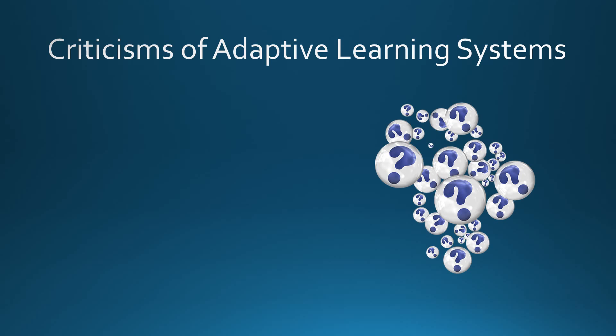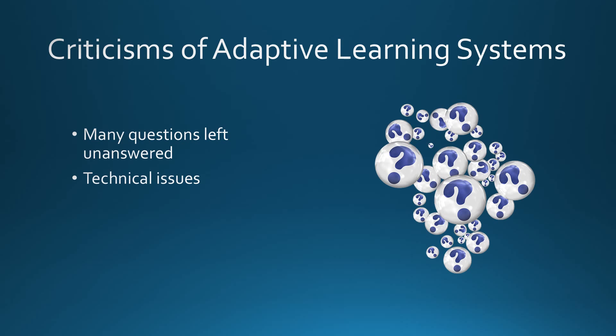There are criticisms of adaptive learning systems as well. Opponents suggest there is no one true way to collect information, and the type of data to collect is debated. What information is needed to create the best learning model? How should it be collected? Besides content, what other aspects of learning should be adaptive to the learner? Potential problems with technological components of the system is also a concern, as is expecting the facilitator to be an expert on troubleshooting those issues.